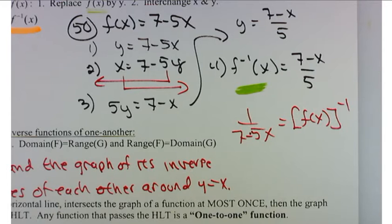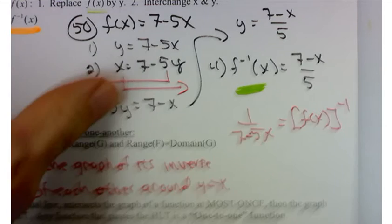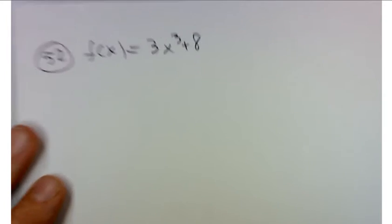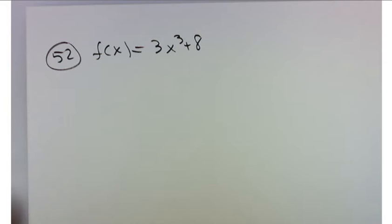So let's do one, maybe two examples of finding the inverse, and then I should call it a day for today. We'll start with problem number 52, or we'll continue with problem 52, I should say. f of x is 3x cubed plus 8. So Keegan, what's our first step? Put it to y equals. Good. So y equals 3x cubed plus 8.